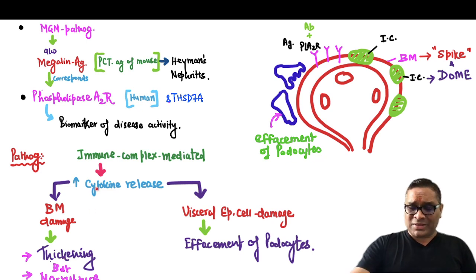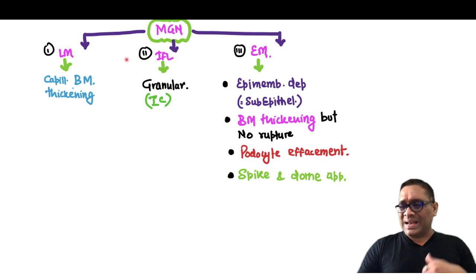So these are the pathogenesis because of the immune complex. On light microscopy, electron microscopy and immunofluorescence microscopy, you will see capillary basement membrane thickening. On immunofluorescence microscopy, granular immunofluorescence because of the immune complexes.